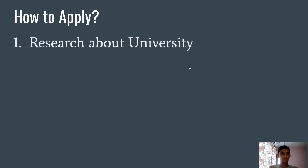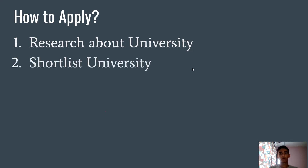The first thing in the application procedure is to research universities — you need to know which universities you want to attend. Second, you need to shortlist universities. There could be 20, 30, 40, even 50 universities that interest you, but it's not feasible monetarily to apply to all of them since each application may require around $100 in fees. So you need to shortlist around 5, 10, or 15 based on your interests and capabilities.